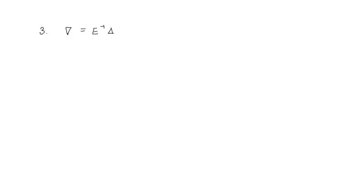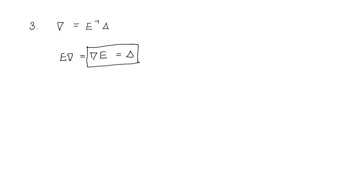Let us prove one more relation: nabla equals E inverse times delta. We already have the relation E nabla = nabla E = delta. Taking the two parts of this relation, we can say that nabla = E inverse delta. If you know all the properties, it is just a rearrangement of operators to prove any relation. This was all for today's lecture. In the next lecture, we are going to study some more properties and prove them.